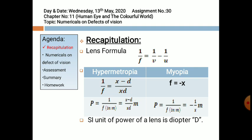Now, what is the lens formula? We all have studied this in class 10th: 1/f = 1/v − 1/u, where f is the focal length, v is the distance of the image, and u is the distance of the object — the object is always placed on the left-hand side. In hypermetropia, the formula becomes 1/f = (x − d) / (xd), where x represents the distance of the object and d represents the distance of the image. In myopia, the focal length is equal to minus x (or minus v).